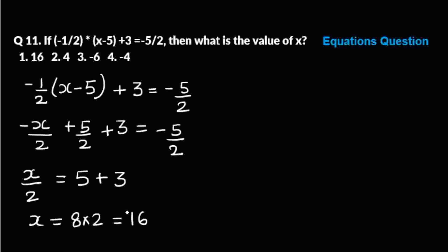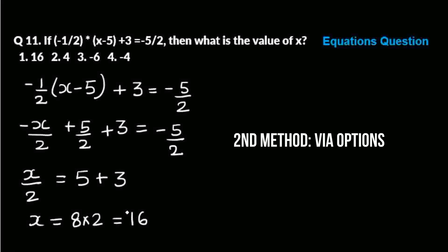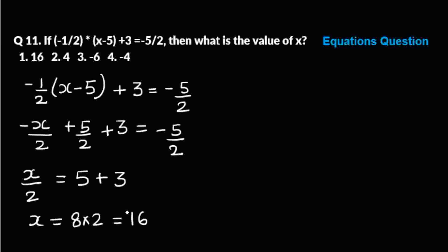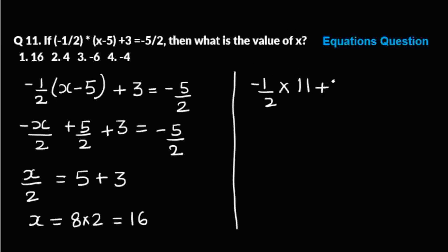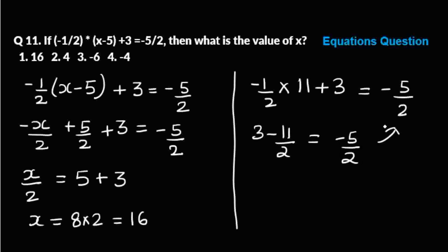This question can also be done by going through the options directly. Let's say we try option one, x equals sixteen. You do not have to use paper and pen — do the calculations mentally. Sixteen minus five is eleven, plus three gives us: three minus eleven by two equals six minus eleven by two equals minus five by two, which matches the right hand side. So the answer is option one. For these kinds of questions, you can just go through the options mentally and get the answer very fast.